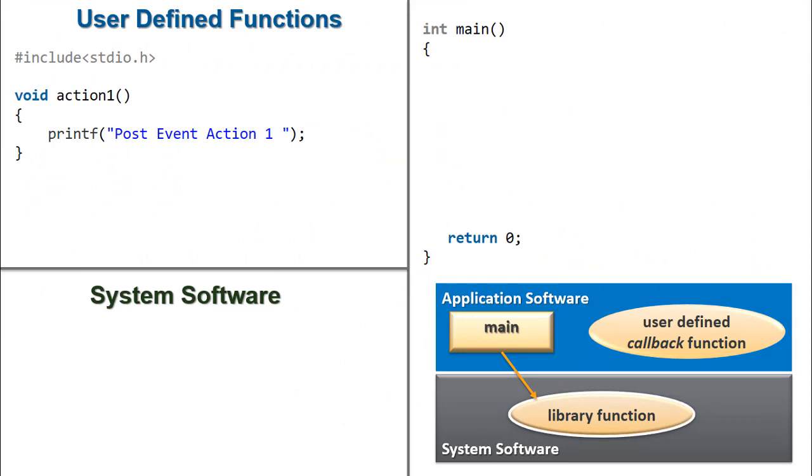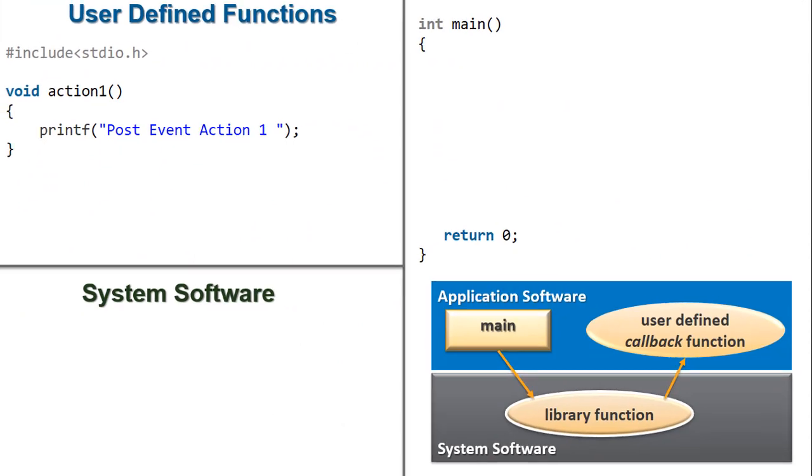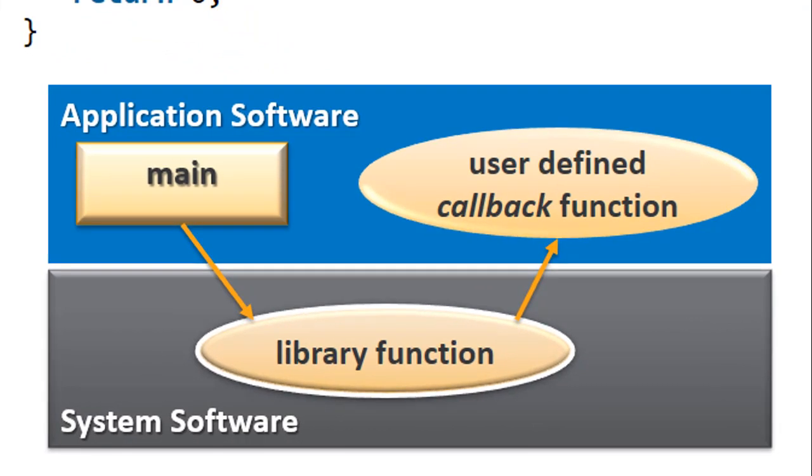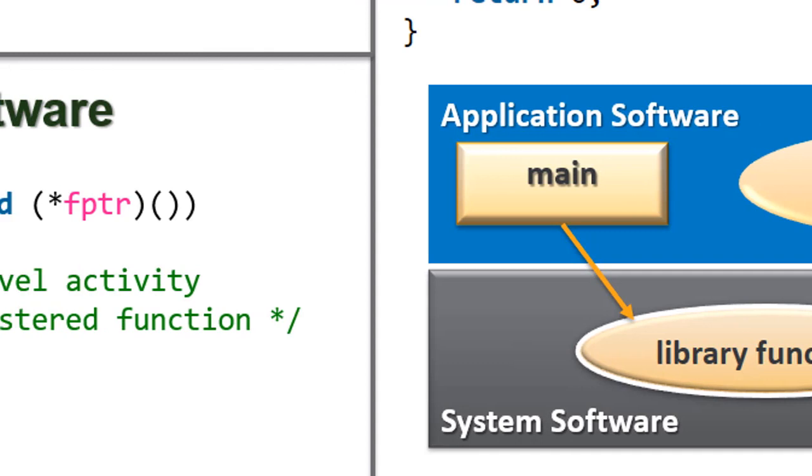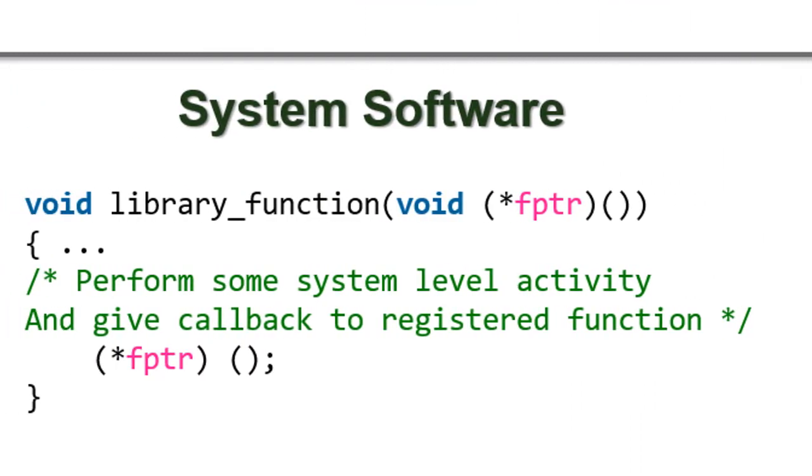Those who are coming from C programming background will agree that the usage of function pointer for say, registering a callback function is a way to achieve polymorphism in C. Let's see. Assume that there is a library function provided in a platform system software. It performs some system level activity, for example, waiting for data from network at a port, and the moment it receives data, it gives callback to the user defined function. The code for this library function accepts a function pointer. After the system level activity, a callback is given to thus registered function.